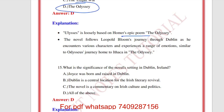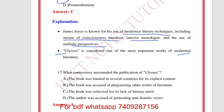What literary style is James Joyce known for? He belongs to modernism and uses modernist literary techniques including stream of consciousness, interior monologue, and use of multiple perspectives. Ulysses is considered one of the most important works of modernist literature.